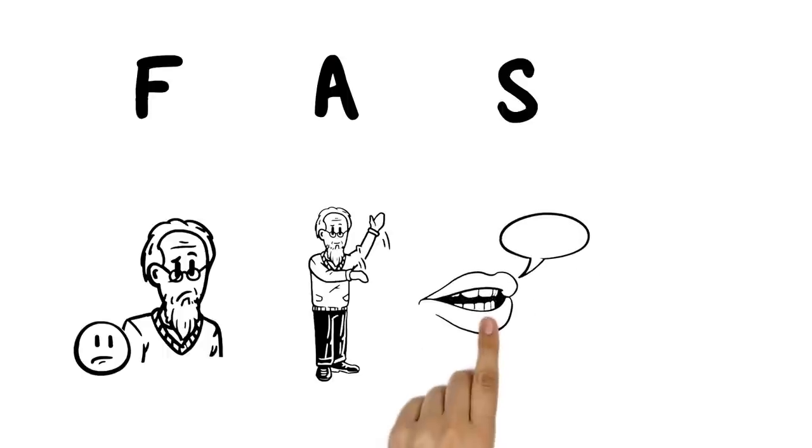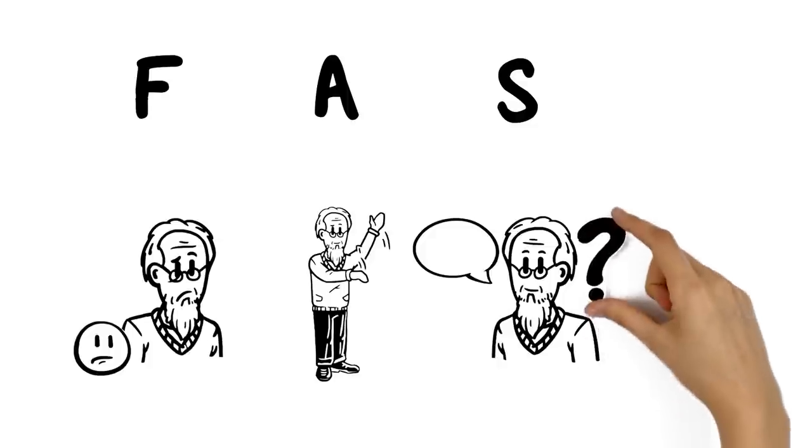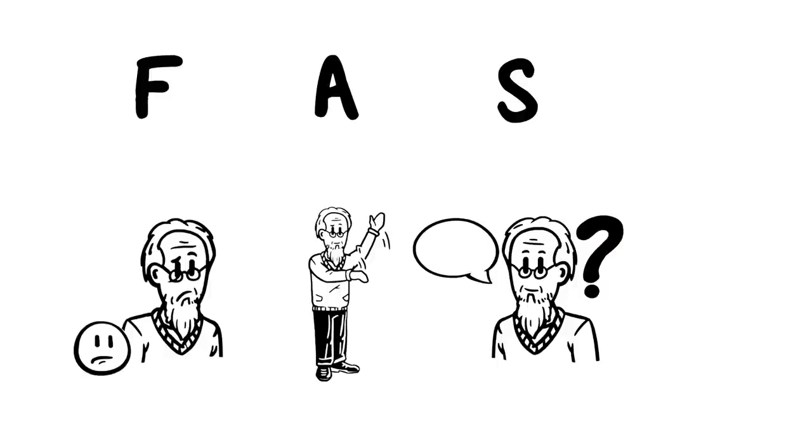The A for arm weakness. Can the person raise both arms and keep them there? The S means speech problems. Can the person speak clearly and understand what you're saying? Is their speech slurred?